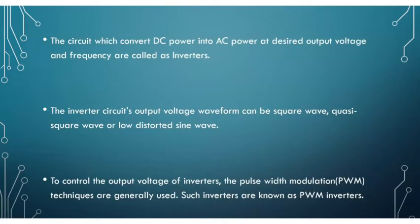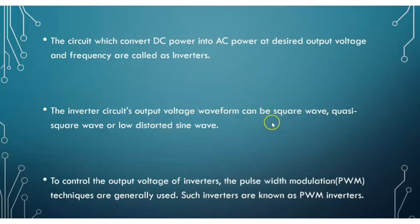The circuit which converts DC power to AC power at a desired output voltage and frequency is called an inverter. The inverter circuit's output voltage waveform can be a square wave, a quasi-square wave — meaning slightly distorted, part square and part sine — or a low distorted sine wave.